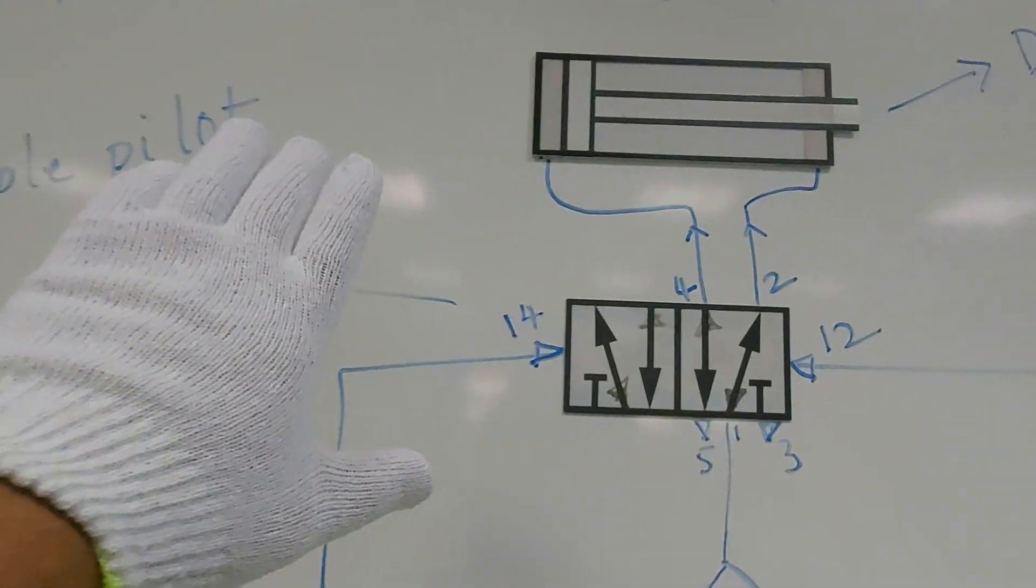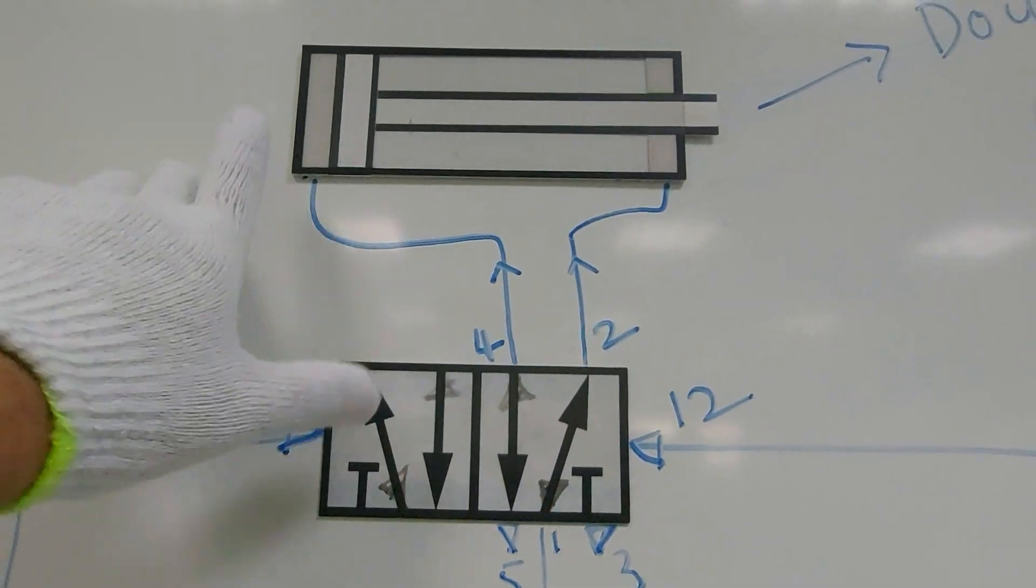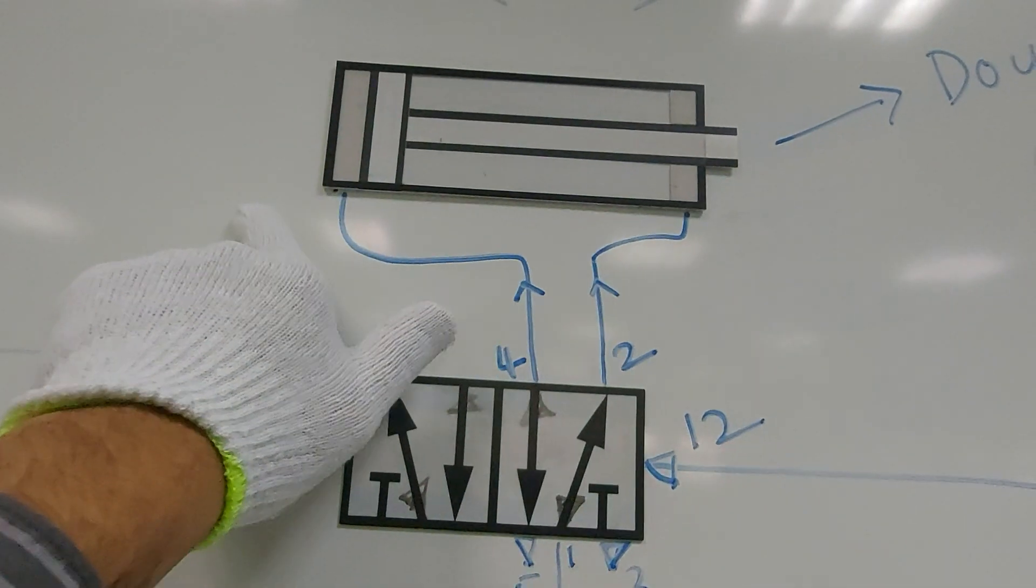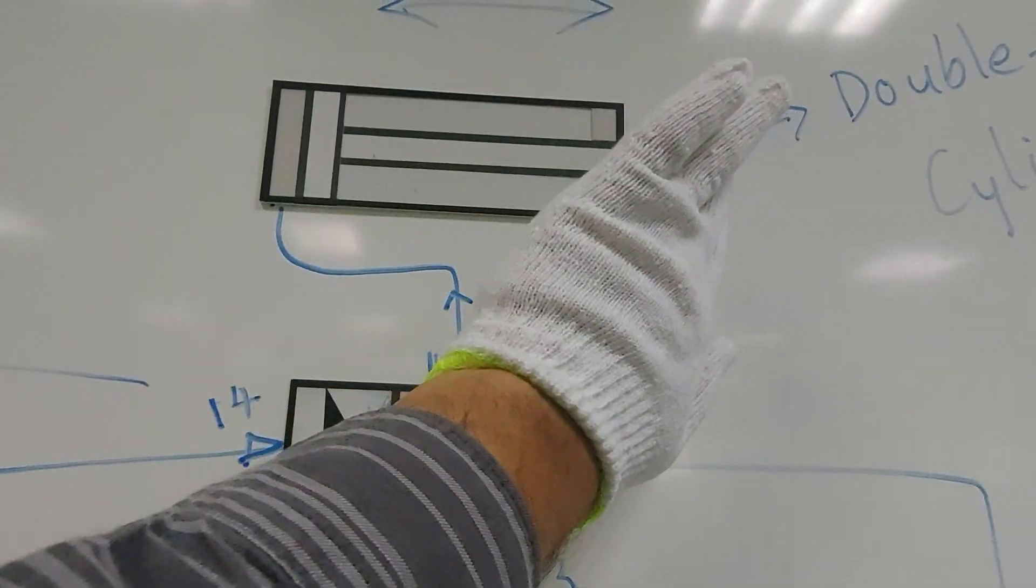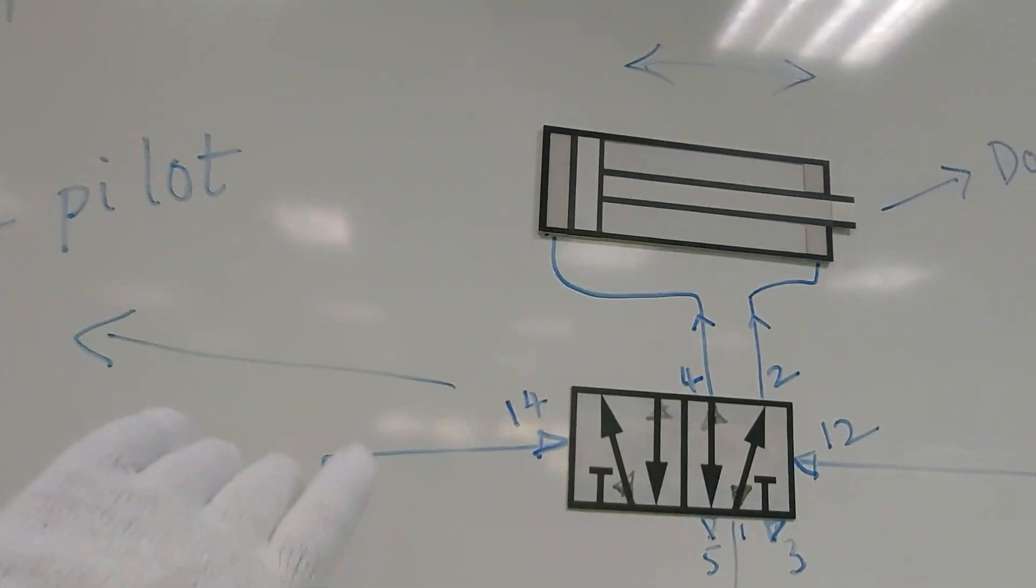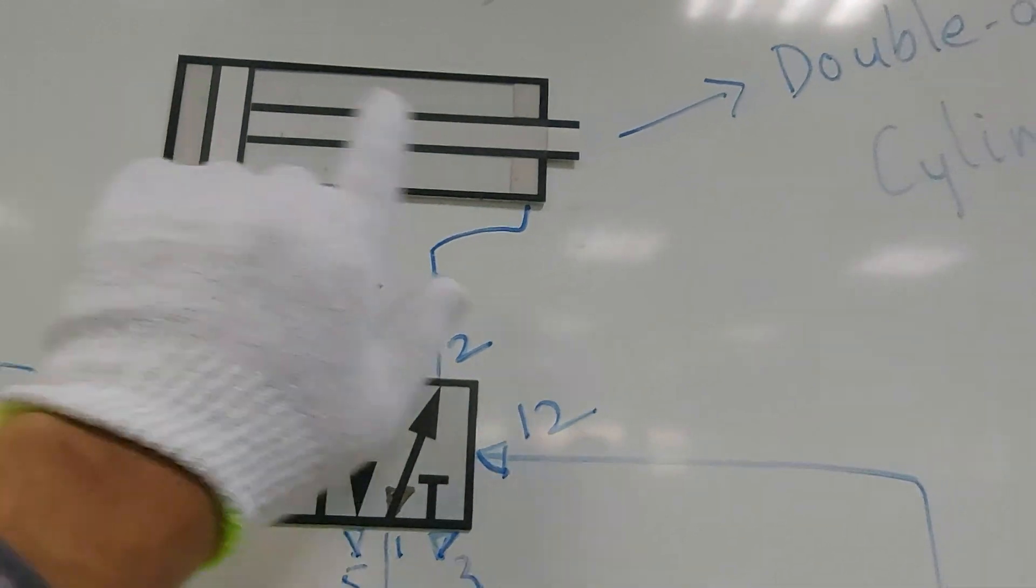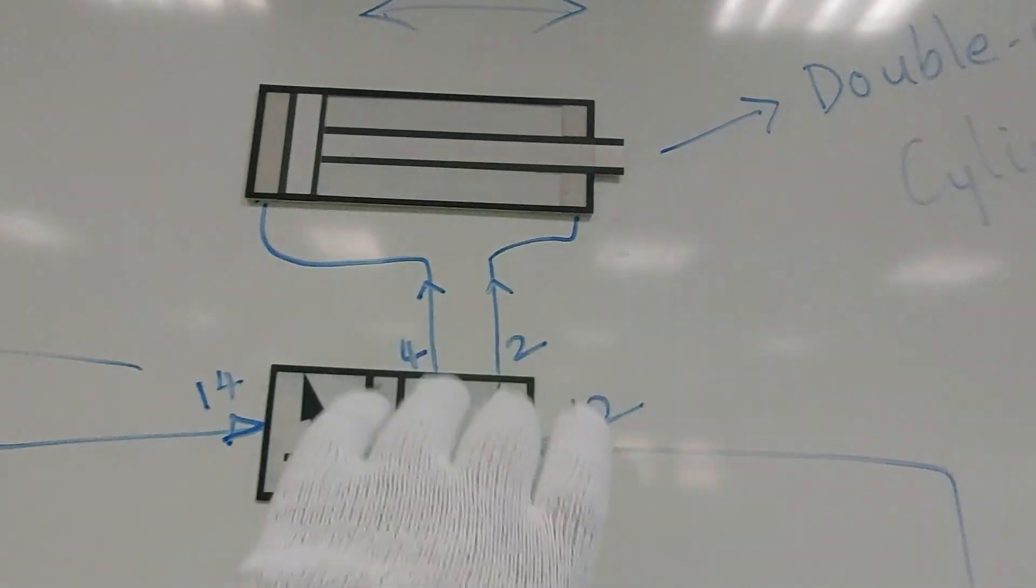So for double acting cylinder, you have to supply air both sides. What was happening in single cylinder was there was a spring which will bring back the piston. But here, you have to supply air both ways so that it will work.